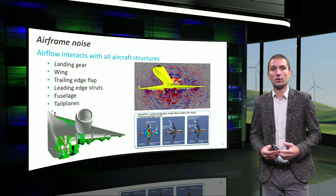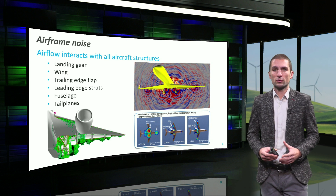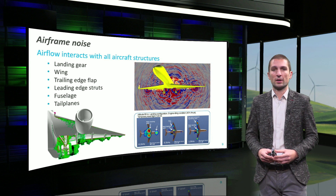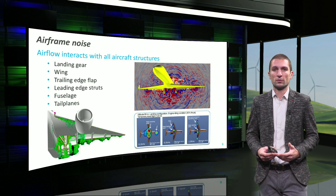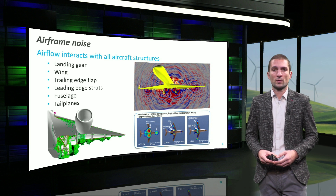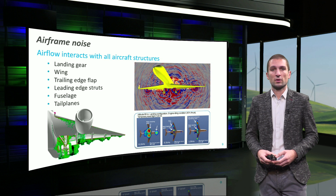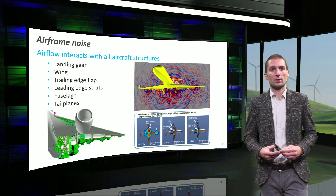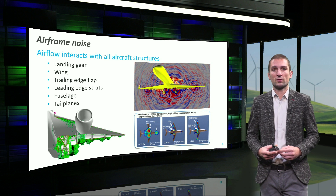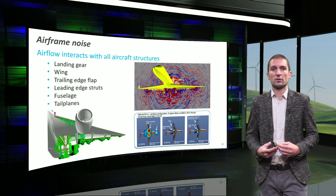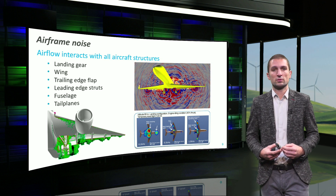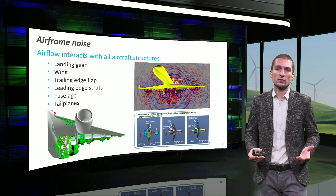Airframe noise includes the noise produced by all those flow structures which are generated by non-ideal aerodynamic surfaces, such as the wings, landing gears, fuselages, etc. In particular, every form of aerodynamic separation and small cavities in an aircraft are a source of non-negligible Reynolds stresses and unsteady force variation, thus sources of noise.